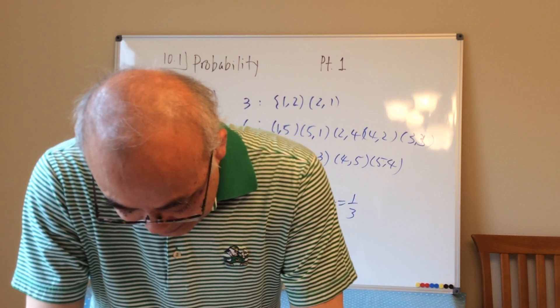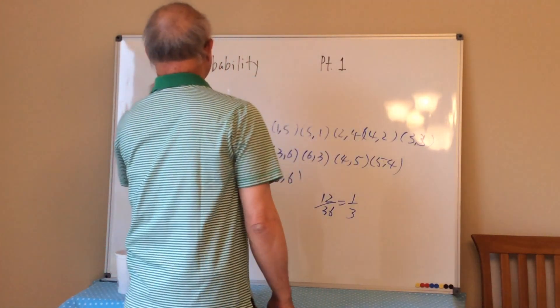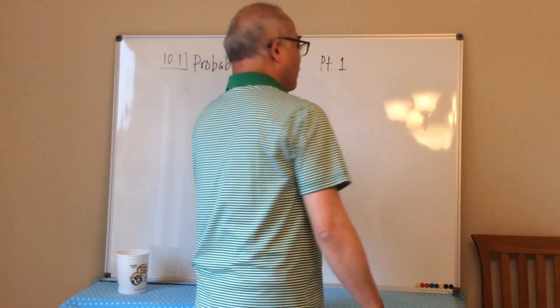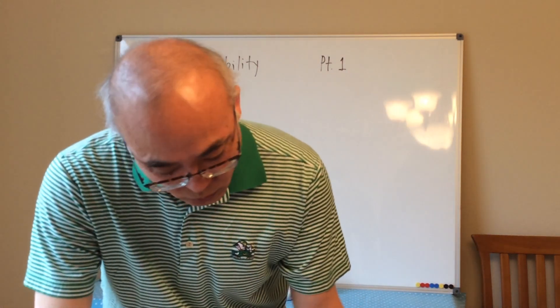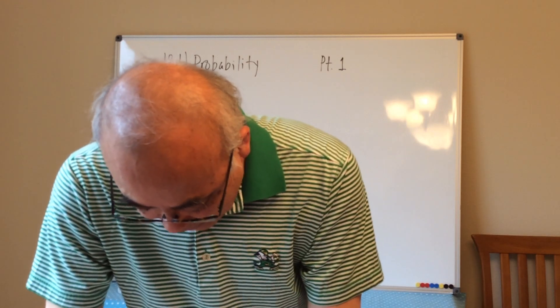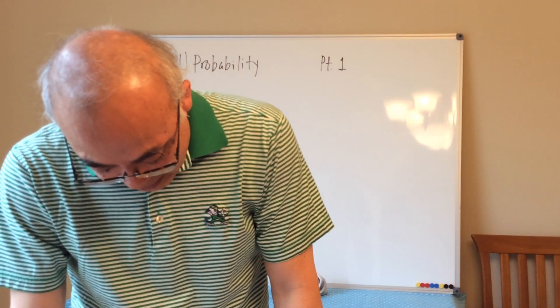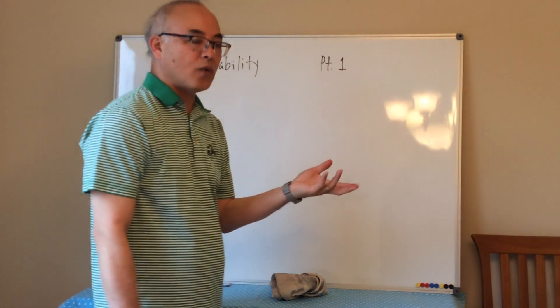A probability function, or probability distribution function (PDF), is when you take the distributions and plot what the probability looks like. Two key properties: first, when you add all probabilities together they must equal 1. Second, each individual probability must be between 0 and 1 — you cannot have a probability greater than 1 or a negative probability.